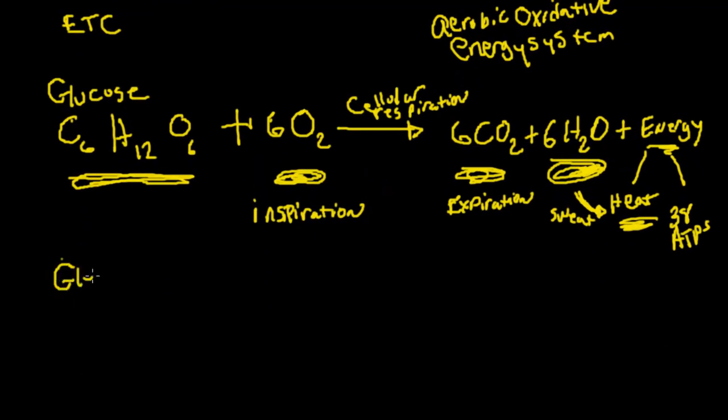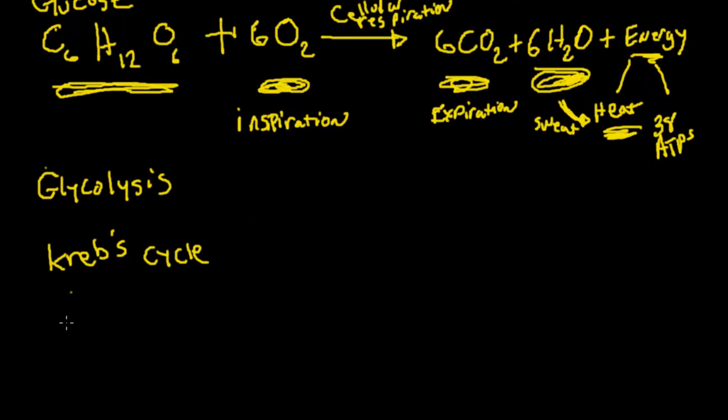So we have glycolysis, we have the Krebs cycle, and we have the electron transport chain. For glycolysis, we're netting about two ATPs. We're also getting two ATPs here in the Krebs cycle.